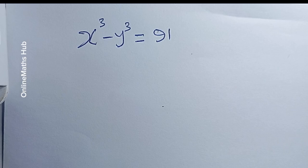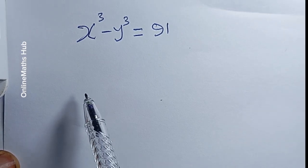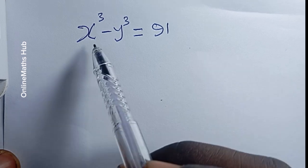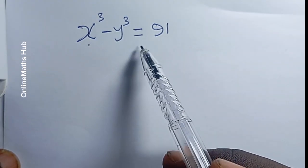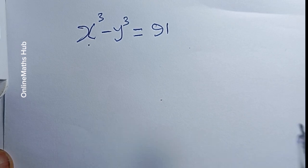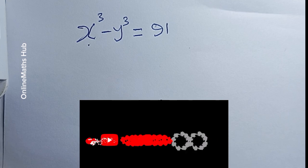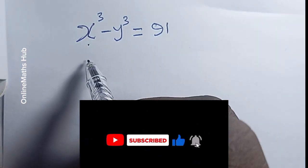Hello friends, welcome back to Online Math. We have this Olympic problem right here to solve. What we have is x³ minus y³ is equal to 99, so what are the values of x and y that will satisfy this equation? You just need to remember one of the algebraic identities.